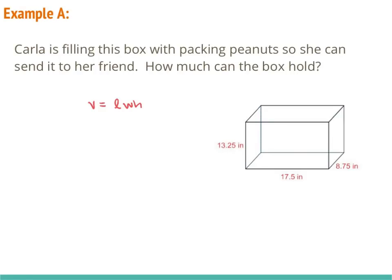So looking at our figure, our length of our rectangular prism is 17.5 inches, our width is 8.75 inches, and our height is 13.25 inches. Now we substitute into our volume formula: V is equal to the length of 17.5, our width of 8.75, and our height of 13.25.